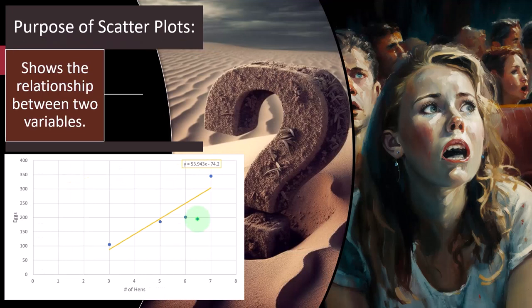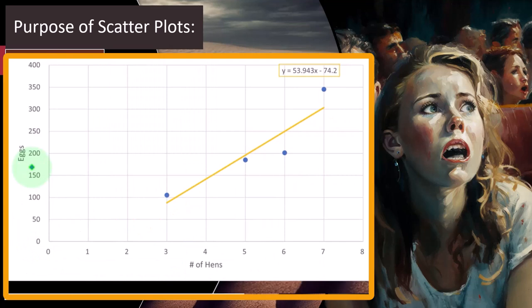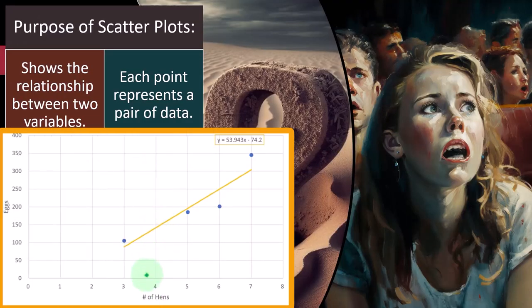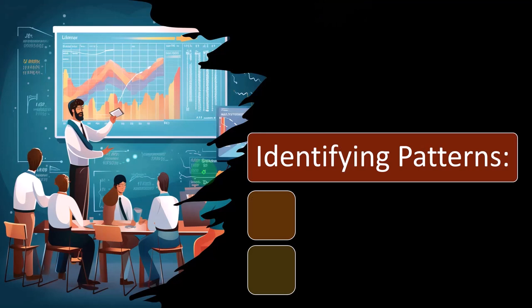Purpose of scatter plots: to show the relationship between two variables. Back to our hens and eggs — if we plot these two things together we can show the relationship. Intuitively, as a farmer, you'd have a pretty good sense that hens are causing the eggs and that more hens means more eggs. Each point represents a pair of data. But by plotting them, you get a better sense of exactly what that relationship is, and you can start making decisions — like how many hens you'd need to produce a target number of eggs — using a linear equation.